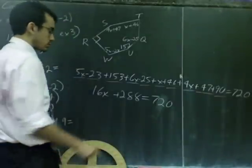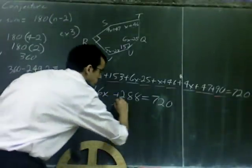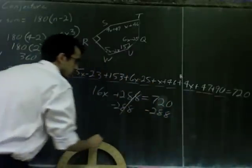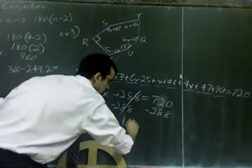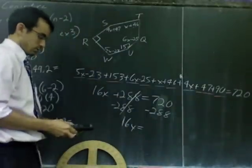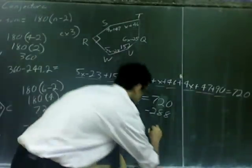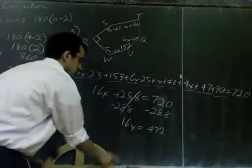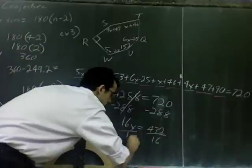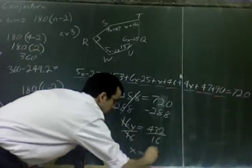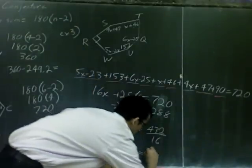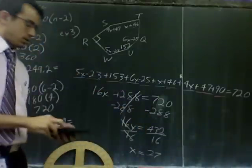And then, all I have to do is solve an equation. Well, I was adding 288, so I subtract 288, canceling those out. 16x is going to come down. 720 minus 288 gives me 432. And then, since it says 16 times x, I divide by 16. And you do get x equals 27.